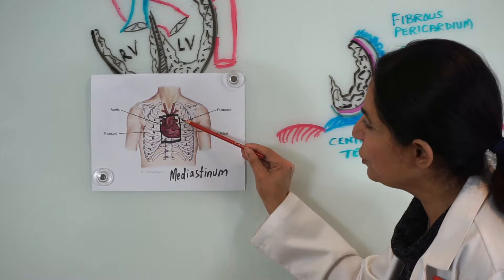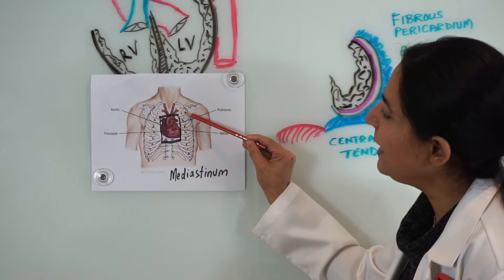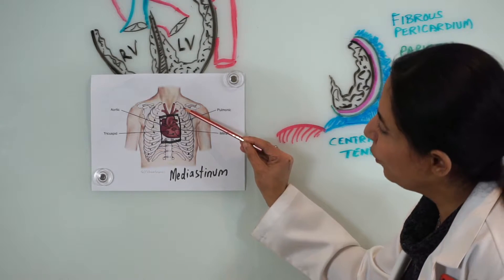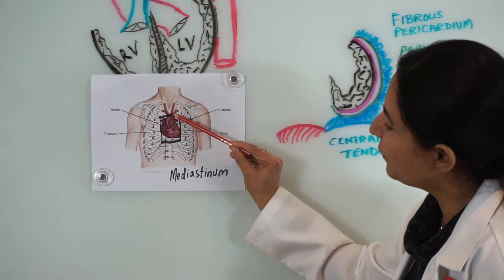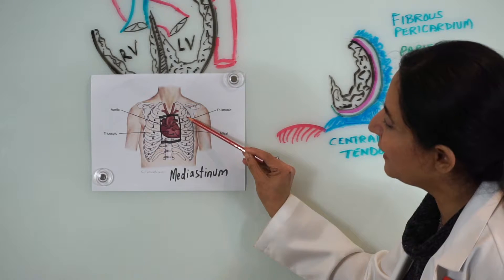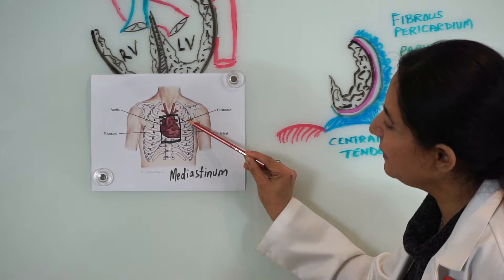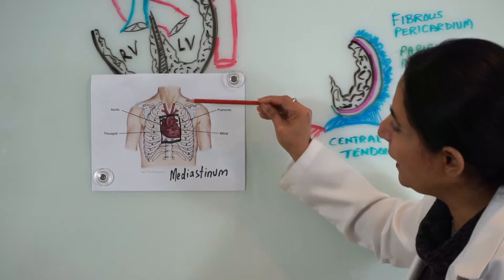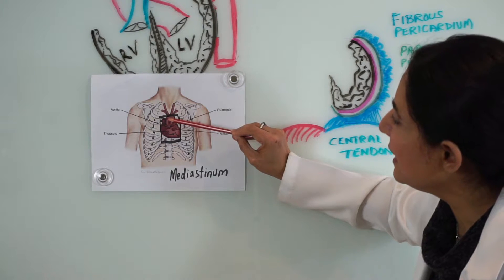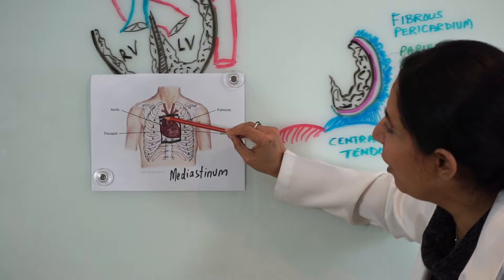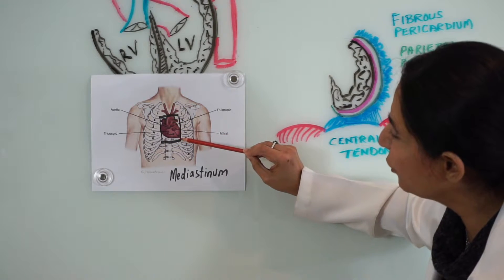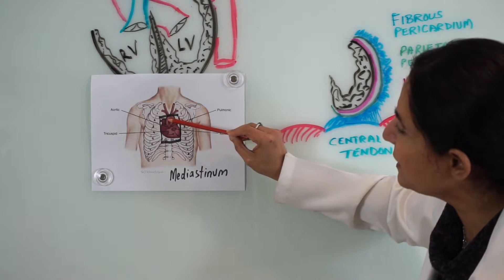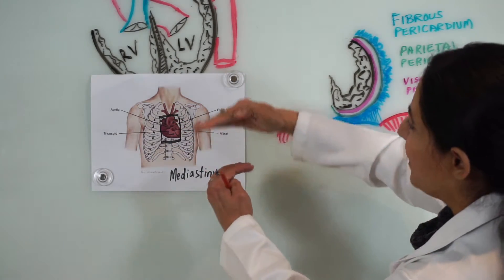I have numbered the intercostal spaces — the spaces between two ribs and the costal cartilages. The first intercostal space is between the first and second rib, the second between the second and third rib, the third between the third and fourth, and so on. The heart is extending from the second intercostal space up to the fifth intercostal space. So the second, third, fourth, and fifth intercostal spaces represent the presence of the heart.